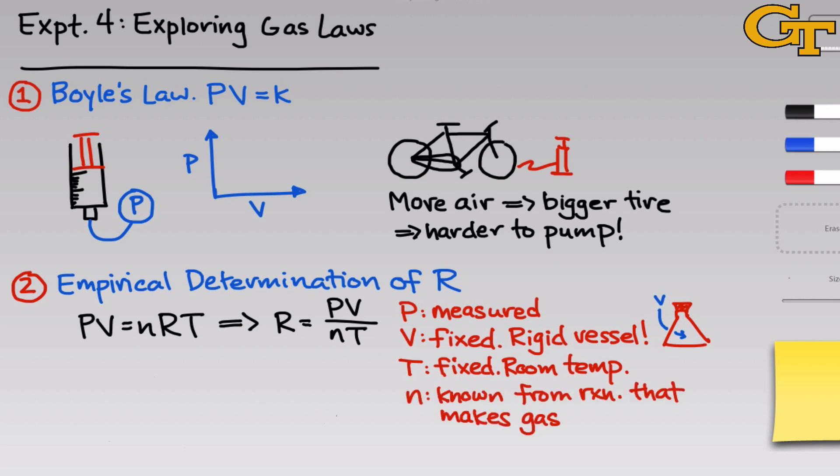And finally, the number of moles of gas that we have on the inside is known if we use a known reaction to generate the gas. In this experiment, we'll use the reaction of magnesium solid or magnesium ribbon with aqueous hydrochloric acid. When these two compounds are combined, the products are magnesium chloride and hydrogen gas. And so we can use this reaction to determine the number of moles of hydrogen gas.